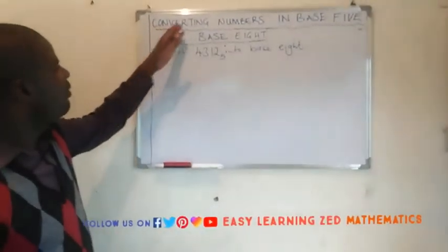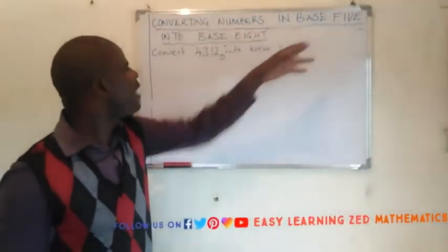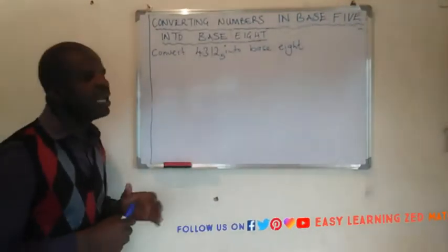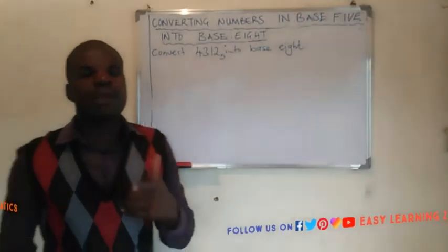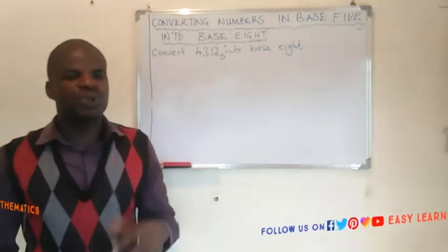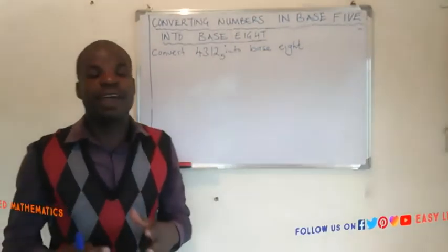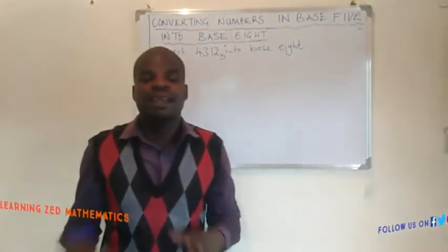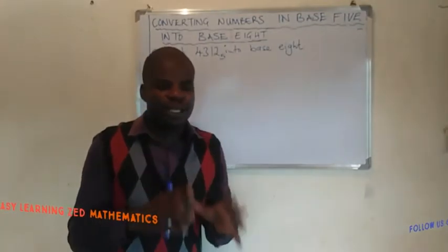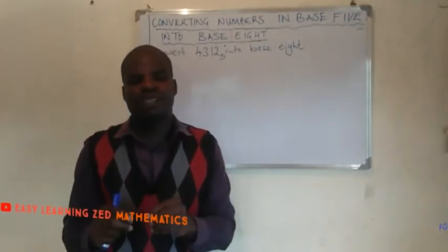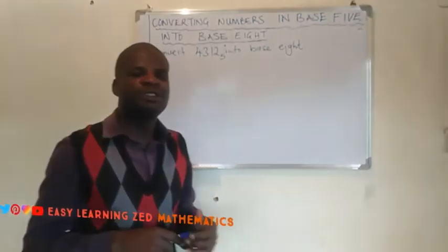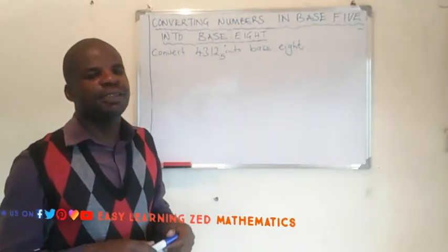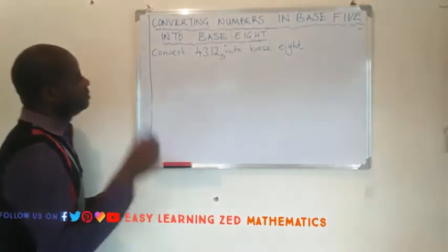In this lesson we are going to look at converting numbers in base 5 into base 8. When converting numbers in base 5 into base 8, first you need to convert the number given in base 5 into base 10, then thereafter you convert the number found into base 8. Watch as I demonstrate how to convert numbers in base 5 into base 8.